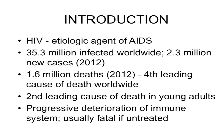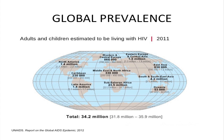This map shows where HIV is seen in the world. You can see the North American continent has about 1.4 million cases, but the bulk of cases in the world are in Africa — 23.5 million cases in Sub-Saharan Africa — so a big impact on that continent.